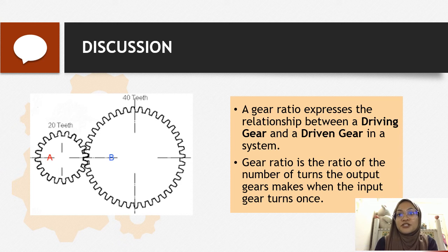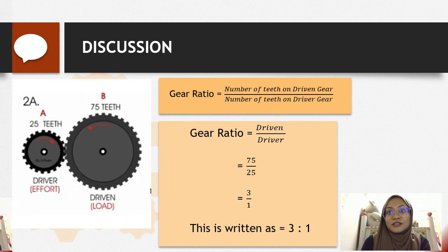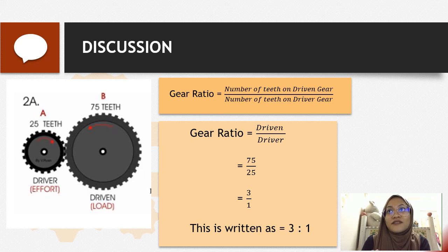A gear ratio expresses the relationship between a driven gear and a driving gear in a system, which means gear ratio is the ratio of the number of turns the output gear makes when the input gear turns once. The formula is number of turns on driven gear over the number of turns of driver gear. The example I provided was, on the driven gear there are 75 teeth connected to a driver gear with 25 teeth. If we put the number into the formula, driven over driver, that's 75 over 25 equals 3 over 1, written as ratio 3:1, which means the driver gear makes at least 3 rotations to get one single rotation of the driven gear.